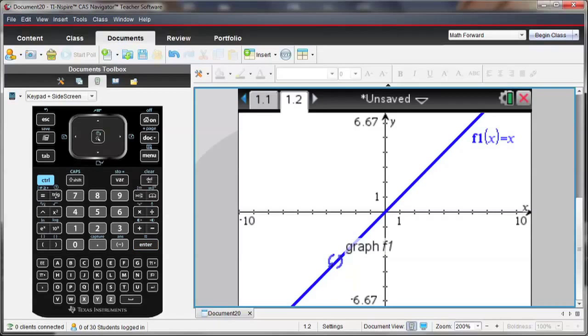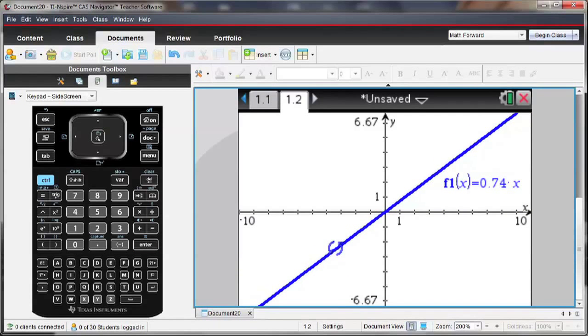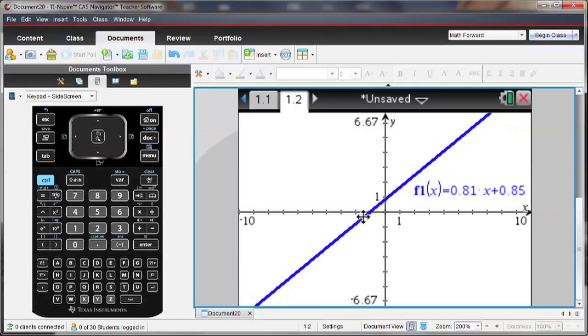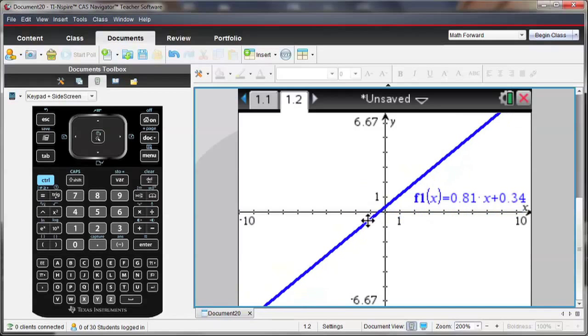Notice that I can grab and rotate that line, and notice how the slope of the line changes as I do so. I can also change the y-intercept. And again, notice how my interaction with this graph changes the equation of that line.